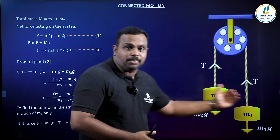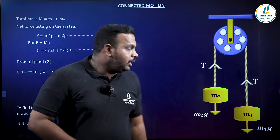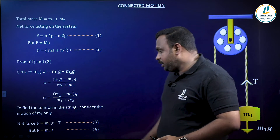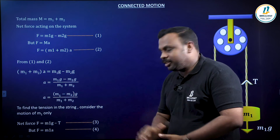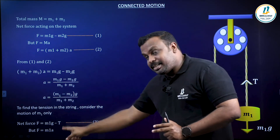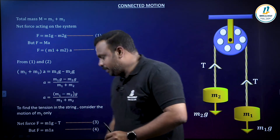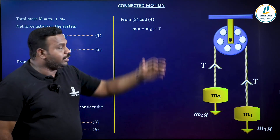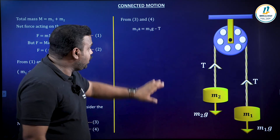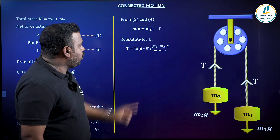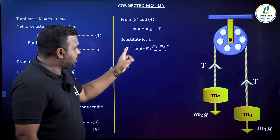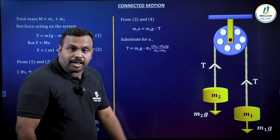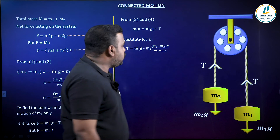By Newton's second law, the net force on M1 also equals M1 times A — take this as equation four. Comparing equations three and four: M1A equals M1g minus T, so T equals M1g minus M1A. Substituting A equals M1 minus M2 into g divided by M1 plus M2, we get T equals M1g minus M1 times M1 minus M2 into g divided by M1 plus M2.